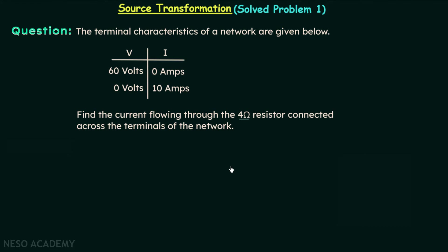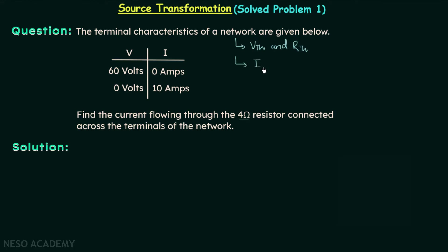Now we will understand the solution of this problem. To find the current flowing through the 4 ohm resistor, we can use the Thevenin's equivalent circuit or the Norton's equivalent circuit. This means we need Vth and Rth, or In and Rn for this network. The only information we have is this characteristics table.